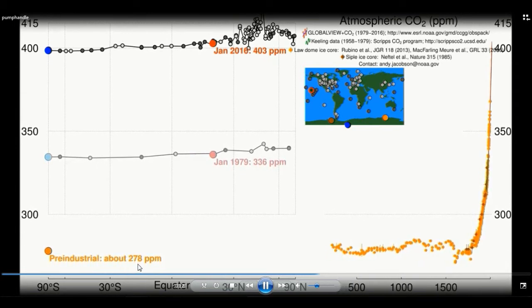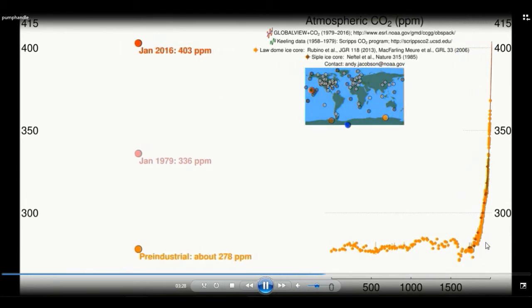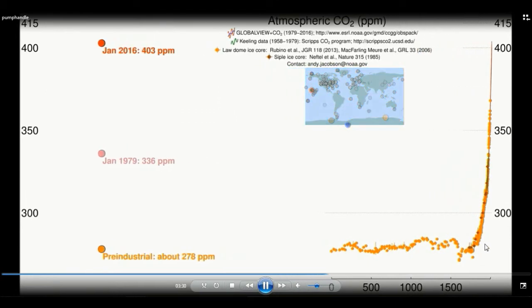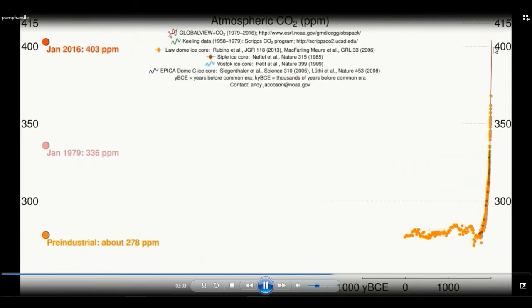About 278 parts per million which are represented by these orange dots here. And you can see in the industrial revolution carbon dioxide concentrations spiked up dramatically.